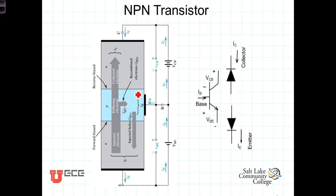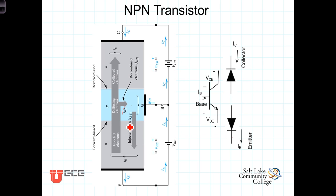The reverse bias establishes a depletion region within the base where there are no unbound carriers — neither holes nor electrons. So the electrons are free, based upon the biasing voltage, to flow from the lower voltage base across the junction into the higher voltage collector. In addition to the electron current flowing from the emitter into the base, there is a relatively small component of holes in the base — minority carriers flowing into the emitter from the base — but this hole current is relatively small due to the light doping concentrations in the base.